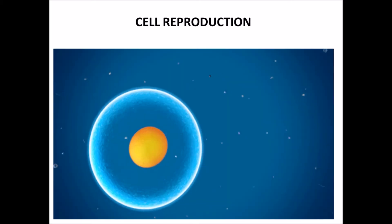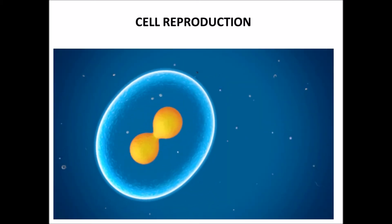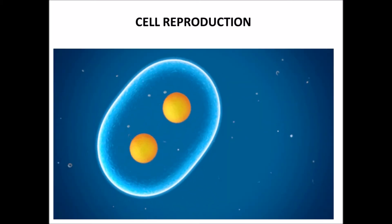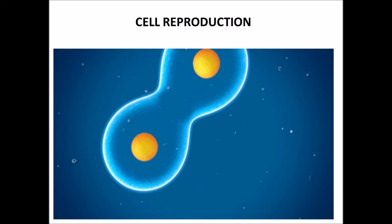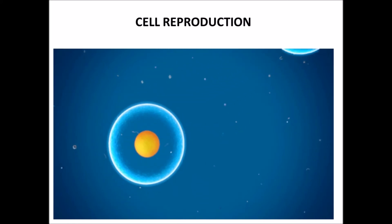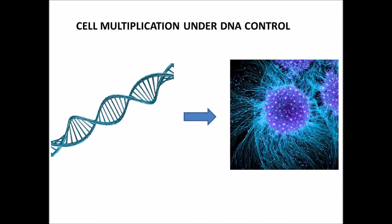In humans, cells of hair, intestine, skin, etc. are continuously multiplying in a controlled fashion. This cell multiplication is under the control of DNA, which controls the cell multiplication and sees that they are multiplying in a constant fashion.